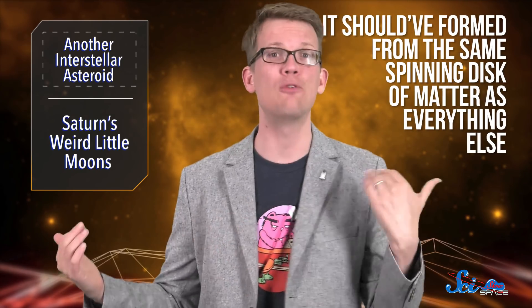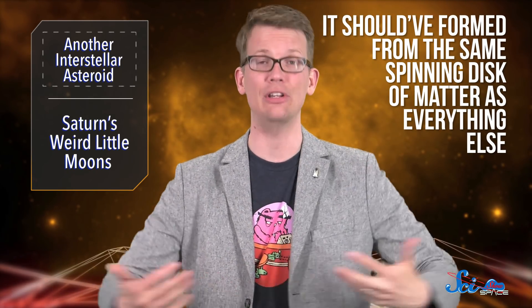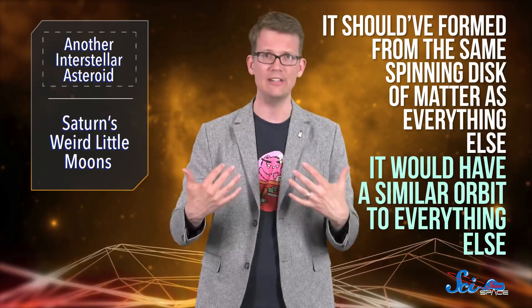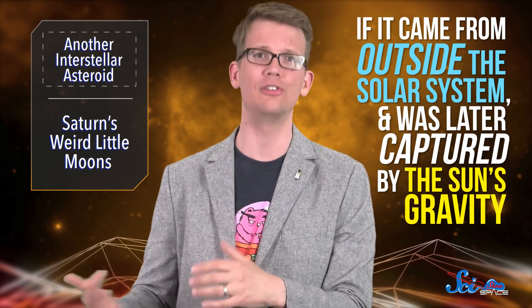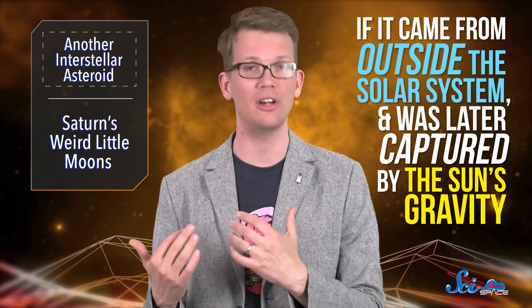But if it's been around for that long, its orbit should be a lot more normal. It should have formed from the same spinning disk of matter as everything else. And that would mean that it would have a similar orbit to everything else. The researchers suggest that BZ could only have such a strange path if it came from outside the solar system and was later captured by the Sun's gravity. Basically, billions of years ago, it immigrated to our neighborhood.